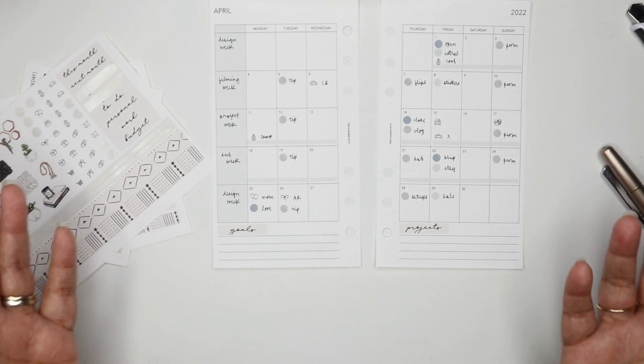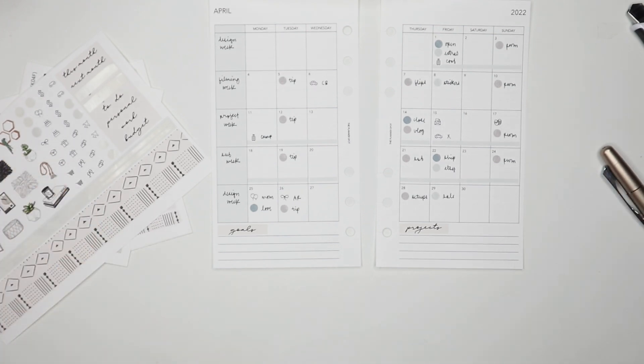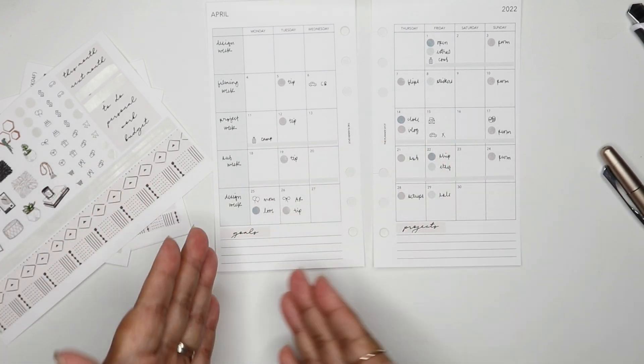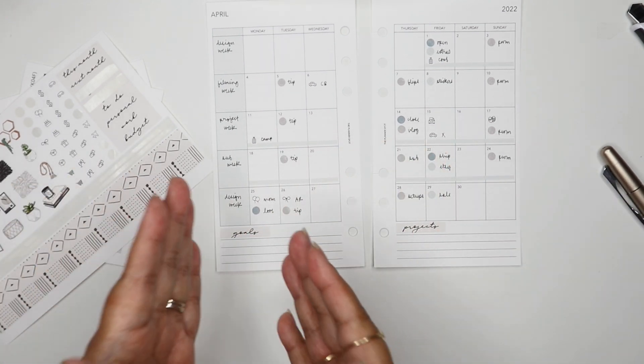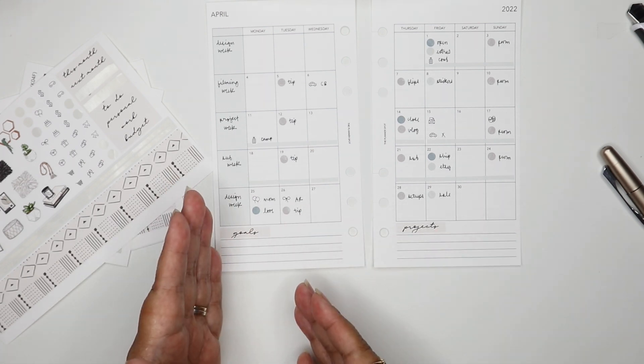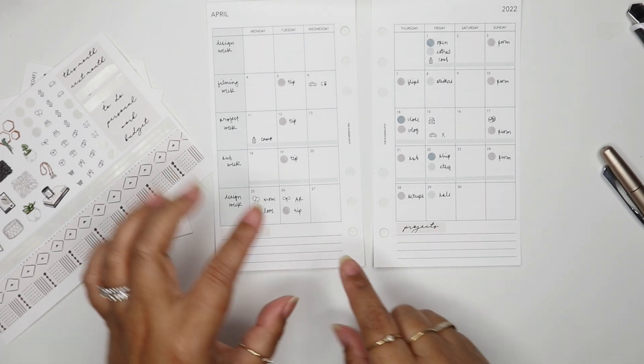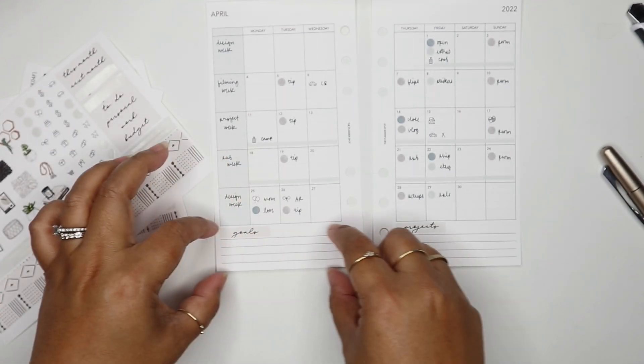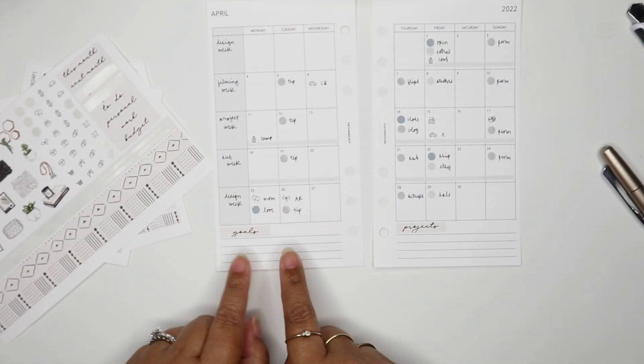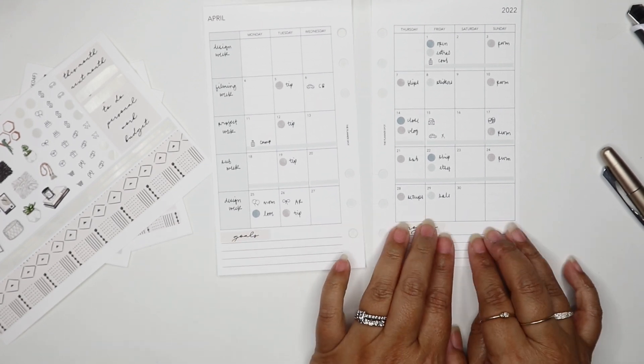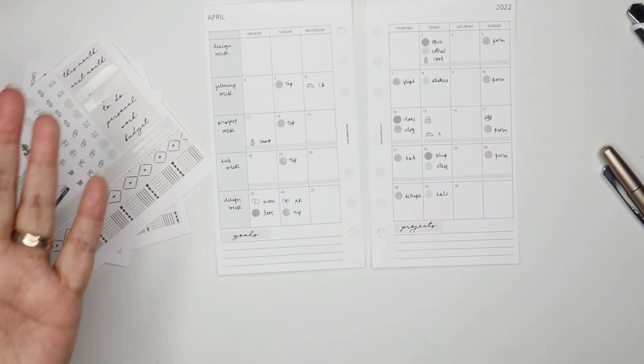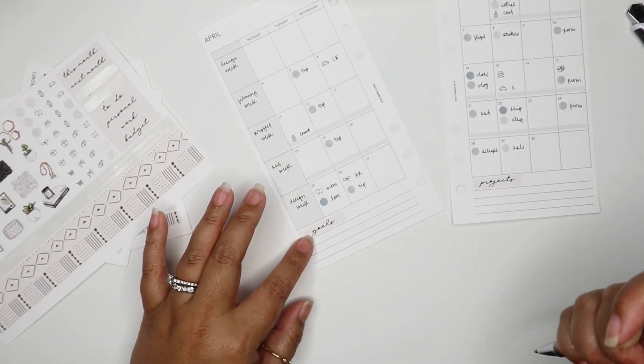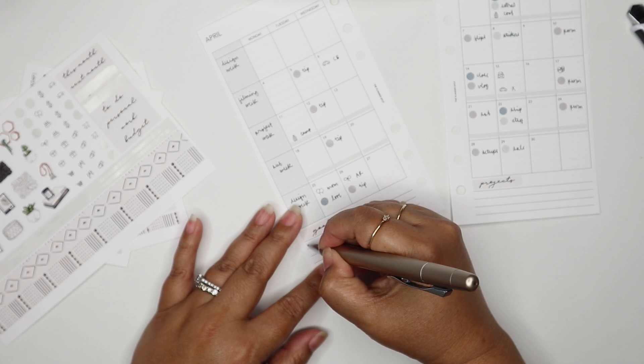When I first designed these inserts I wasn't thinking that I was going to do my goals here on this side and my projects on this side. I just made lines because I needed to fill in space. The way I use it is for those four months where there's no lines on the bottom left, I just move goals and projects both on this side.